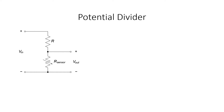I want to introduce two different possible sensing circuits. The first one I want to introduce is the potential divider. If we're using a sensor where the resistance depends on whatever we're trying to sense, then the output voltage that we measure in this circuit is going to change as a function of whatever it is that we're trying to sense.